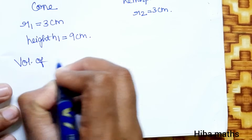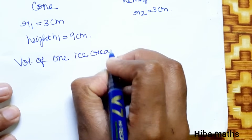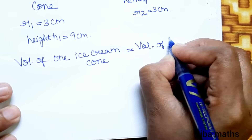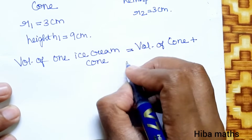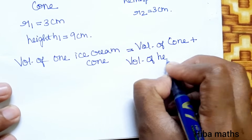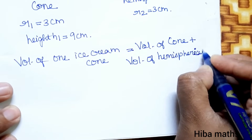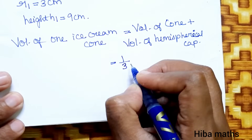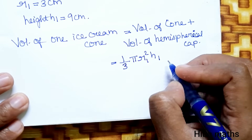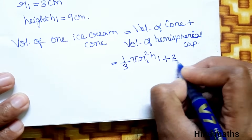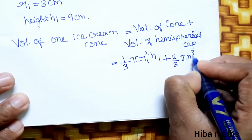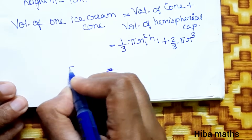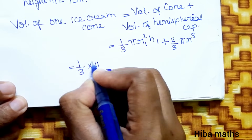Volume of 1 ice cream cone = volume of cone + volume of hemispherical cap. Volume of cone = (1/3)πr²h1, plus volume of hemisphere = (2/3)πr³.